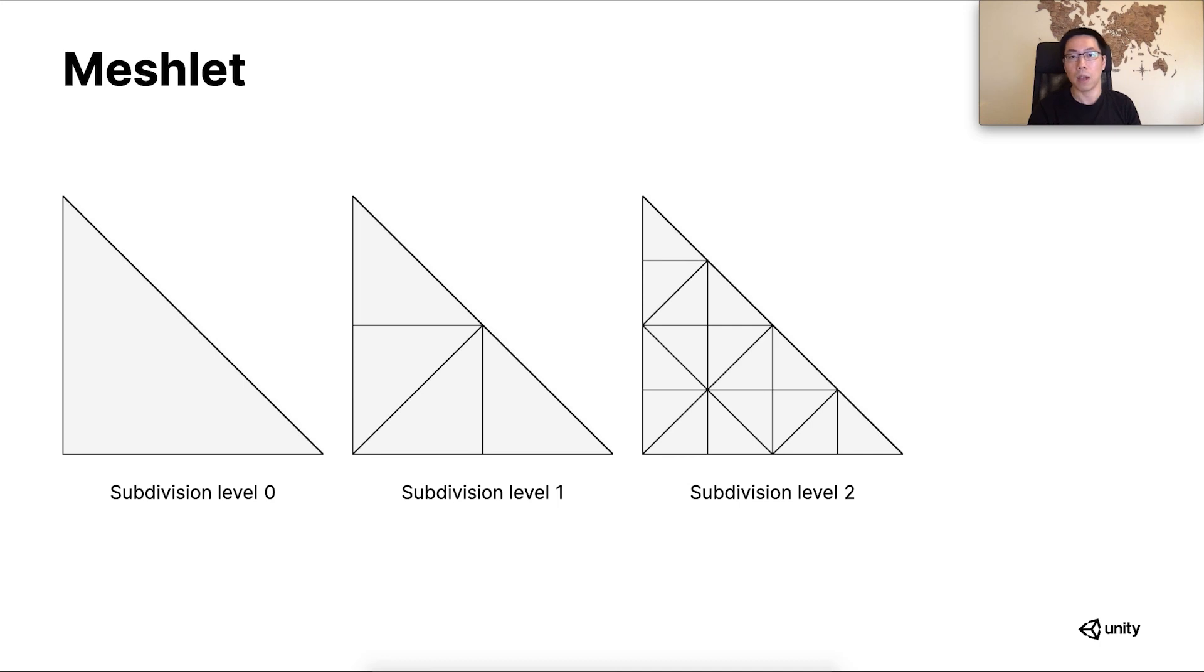Now let's get back to the details of the technique called meshlet. To achieve higher triangle density under the current limitations, one quick way is to render more triangles for each leaf node. Jonathan implemented this meshlet idea in his original paper. This illustration shows what these pre-subdivided triangles look like at levels 0, 1, and 2.